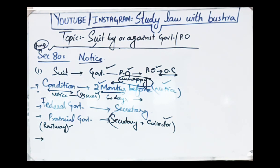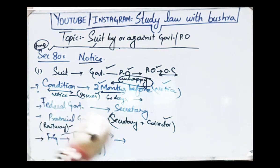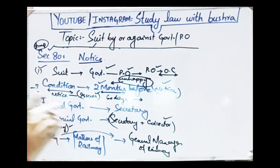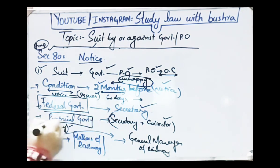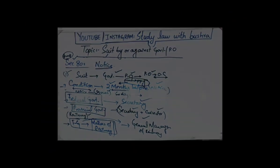Thirdly, in case of a suit against the federal government relating to the affairs of railway, the notice must be given to the General Manager of the railway concerned. So if your suit against the federal government is related to railway matters, you send the notice two months before to the General Manager of the concerned railway. Section 80 tells us that notice is a must and specifies to whom the notice must be sent in government cases.